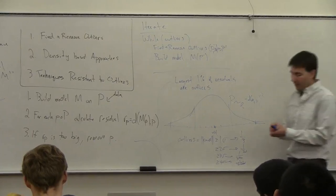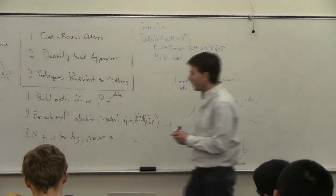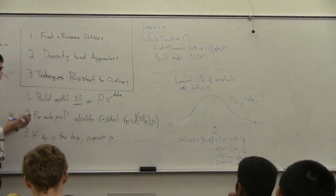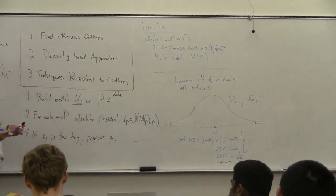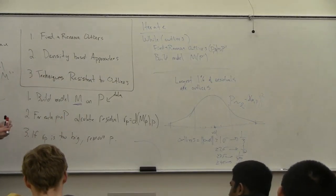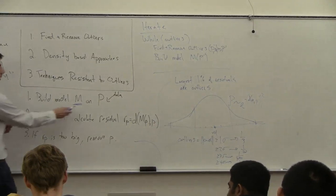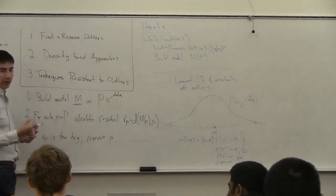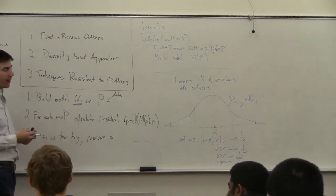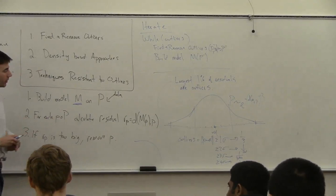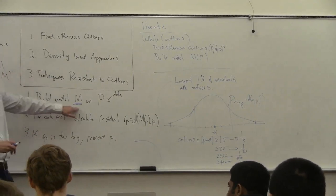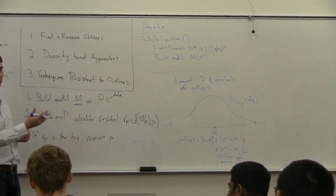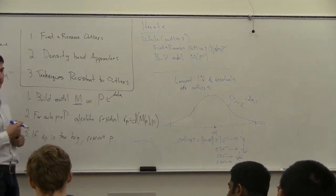So if you can still build a model, then you shouldn't really worry about the outliers — you can keep them in your data set. Your goal in data mining is to somehow construct some simpler explanation of what your data is doing, some simpler pattern. And if you can do this even with the outliers in there, then there's no real need to actually take them out.